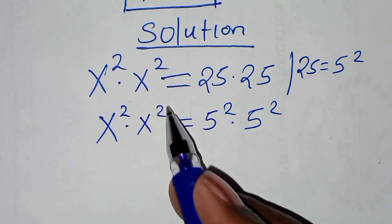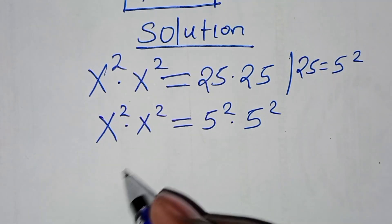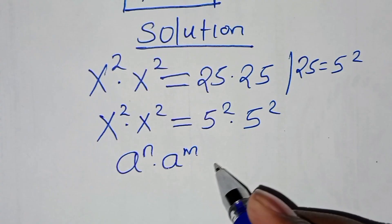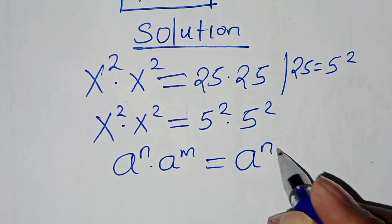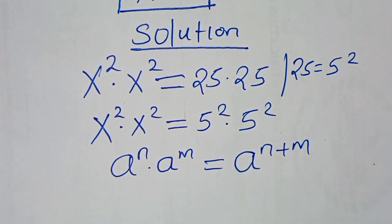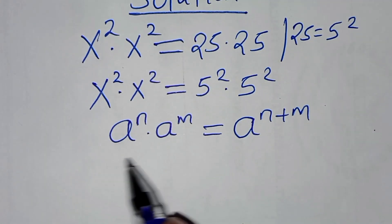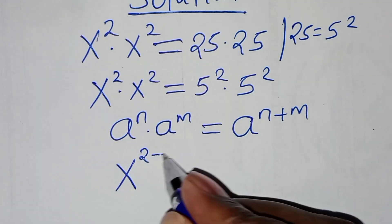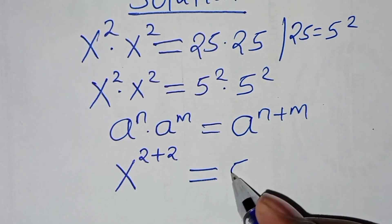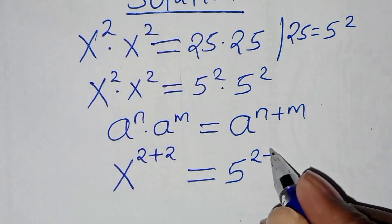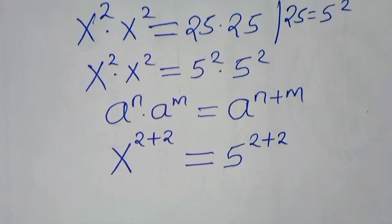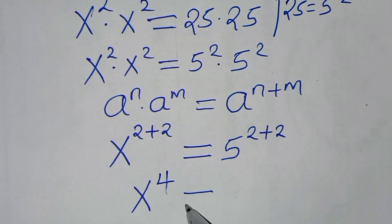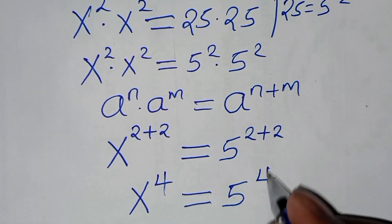Now, x to power 2 times x to power 2, and 5 to power 2 times 5 to power 2, this is in the form of a to power n times a to power m, which we can express as a to power n plus m. Applying this exponent property, we have x raised to power 2 plus 2, equal to 5 raised to power 2 plus 2. So this is the same thing as x to power 4 equal to 5 to power 4.